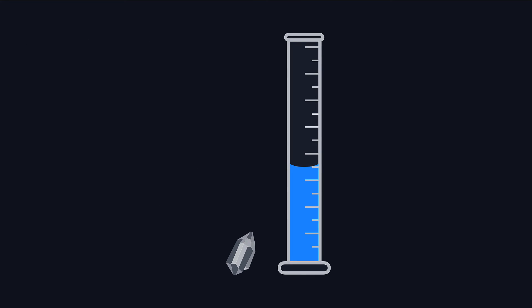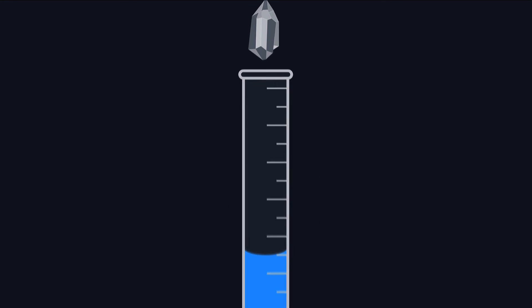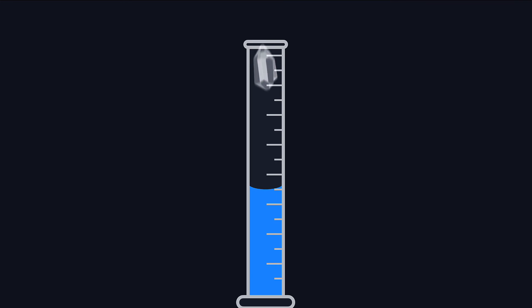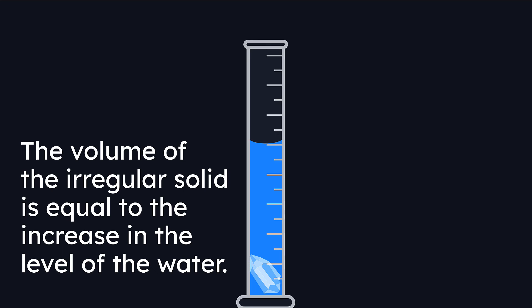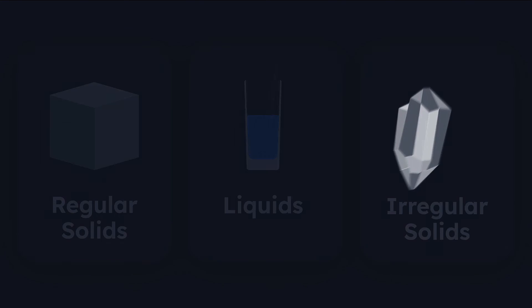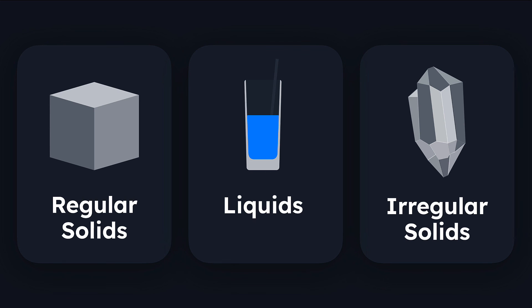Let's look at an example. Here I have my irregular solid — this small crystal — and a graduated cylinder containing some water. You can see the meniscus there. I would start by measuring the volume of the water before inserting the irregular solid, measuring from the bottom of the meniscus. Then I drop the solid into the graduated cylinder, and the water level will rise. The volume of that irregular solid is equal to the increase in the water level — the amount of displacement the solid caused.